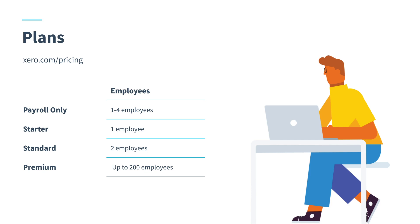There are several plans which include payroll — it all depends on how many employees you need to pay. Firstly there is Payroll Only, suitable for employers with one to four employees, giving you a simple way to pay staff and comply with single touch payroll. There are also other business editions: a Starter plan with payroll for up to one employee, a Standard plan for up to two employees, and a Premium plan for up to two hundred employees. For accountants or bookkeepers there's also a Payroll Cash Book subscription. For further information on plans or pricing visit xero.com/pricing.